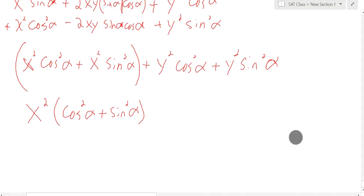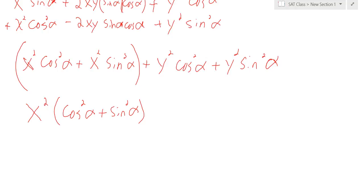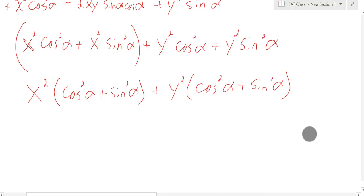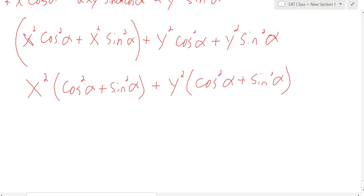Is that okay? That's what that becomes. We took out the x squared. Then over here, we're going to have y squared times cosine squared alpha plus sine squared alpha. And again, alpha is just there. It's a Greek letter. It's just a variable. But if you have cosine squared something plus sine squared something, that will always and forever be one. So, that's just x squared times one plus y squared times one.